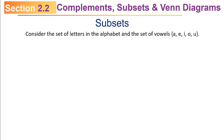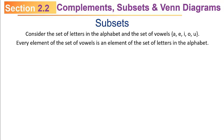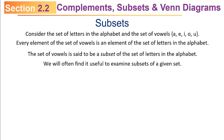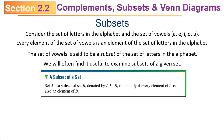Let's talk about the concept of subsets. Consider the set of letters in the alphabet and the set of vowels: the set containing A, E, I, O, and U. Every element of the set of vowels is an element of the set of letters in the alphabet. Having said that, the set of vowels is called a subset of the set of letters of the alphabet. Formally, a set A is a subset of set B — denoted by A followed by the sideways-U-with-a-bar symbol — if and only if every element of A is also an element of B.